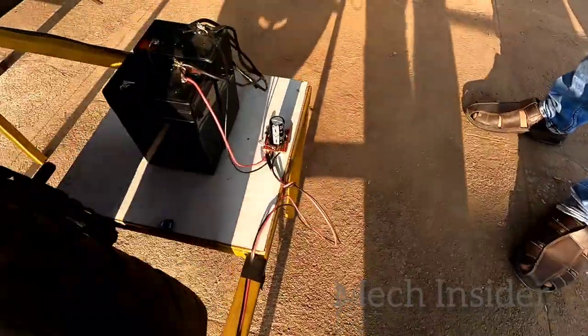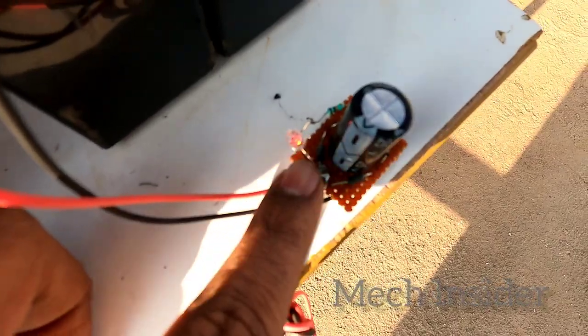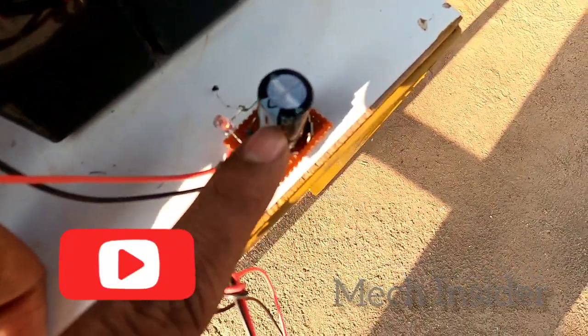The same electricity is stored in the battery. We can see here the LED is glowing, which means that electricity is stored in the capacitor.